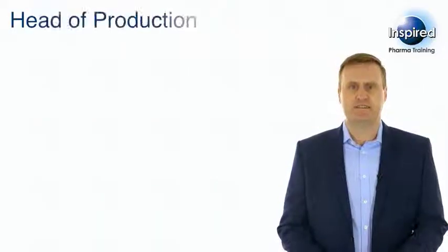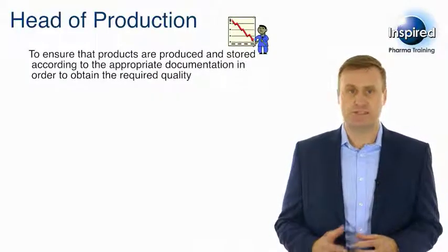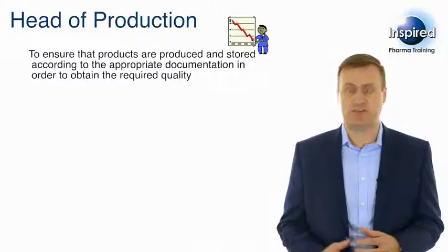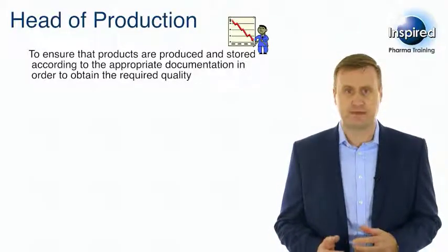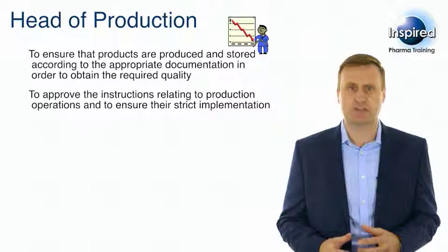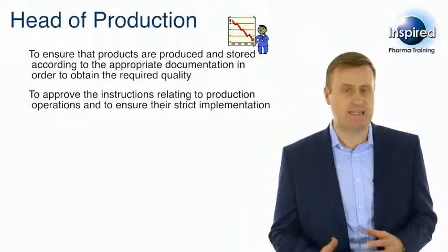The duties of the Head of Production are described in Clause 2.5 of Chapter 2. These are as follows: firstly, to ensure that products are produced and stored according to the appropriate documentation in order to obtain the required quality; and secondly, to approve the instructions related to production operations and to ensure their strict implementation.